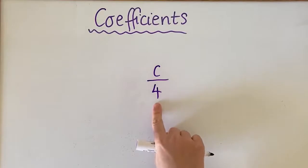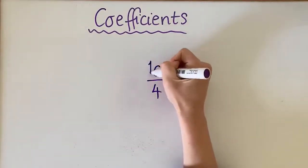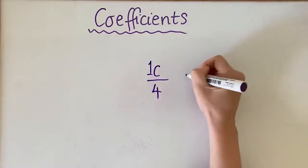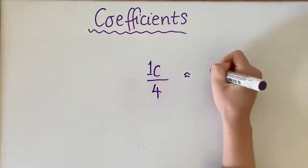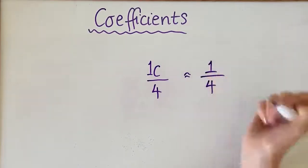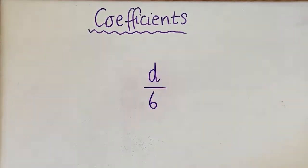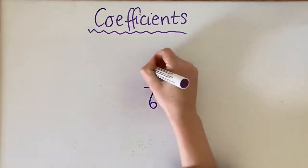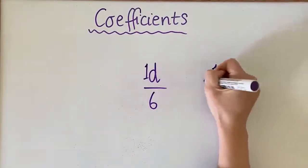And finally if you see something like this, the coefficient is actually 1 quarter because we see that there's a 1 in front of that. So in this circumstance the coefficient then would be 1 over 6.